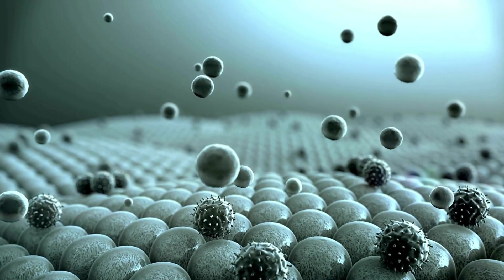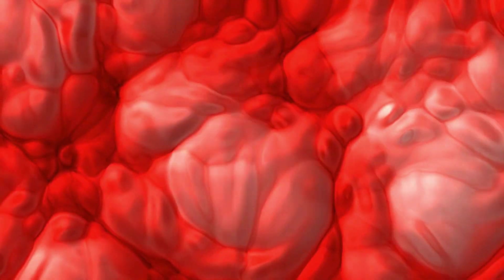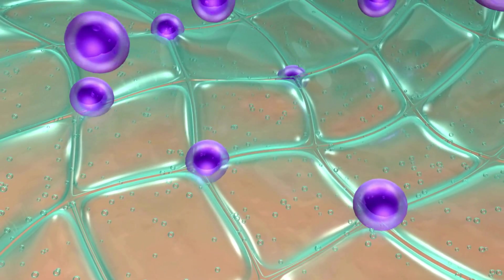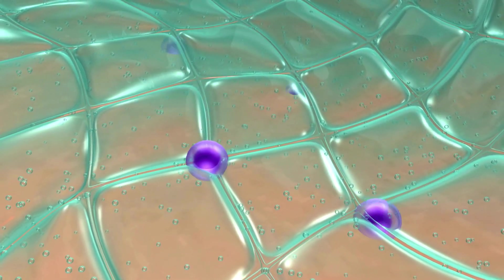Epithelial tissue is tightly packed and forms a continuous layer without any gaps, creating an effective barrier against the penetration of microorganisms and the loss of fluids and nutrients.